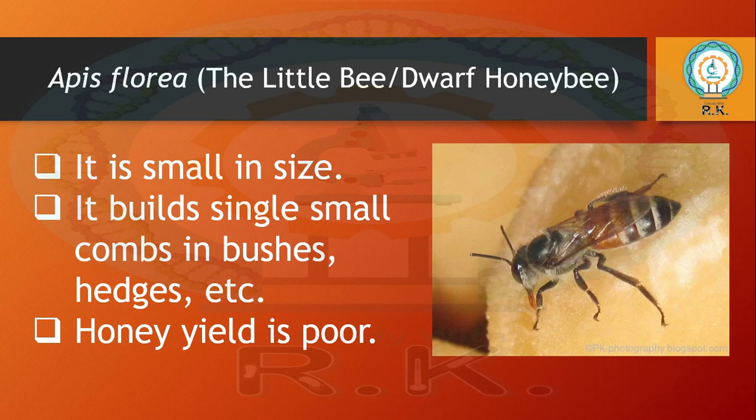Next is Apis florea, the dwarf or little honey bee. It is small in size and builds only a single comb in bushes or hedges of trees. Due to its small size, honey yield is also poor, so this species is also not used for apiculture purpose.